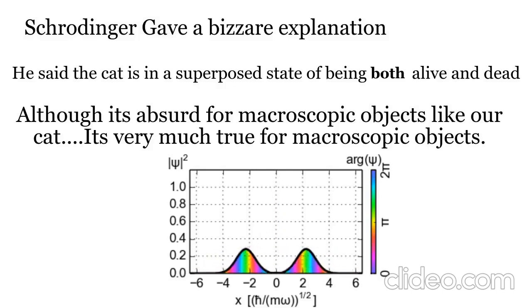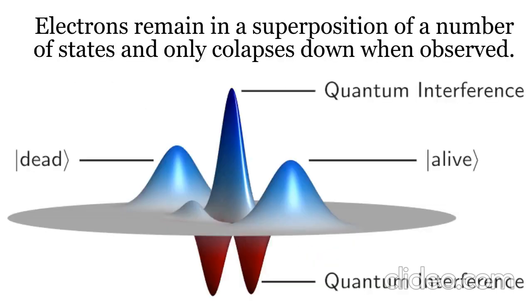And until we observe it, it does not take a particular state. Now, however absurd it may sound to you, it is very much true in the case of quantum objects like electrons. A quantum object remains in a superimposition of a number of states and collapses down to a single state only under observation.